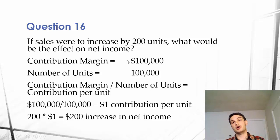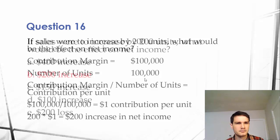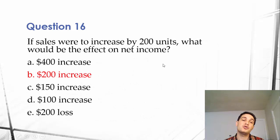Contribution margin, a good way of looking at it is how much for each item are we contributing to our net income. And so, this is just $1 per unit. Such a wonderful number. It's mastery. So, the answer here would be $200.